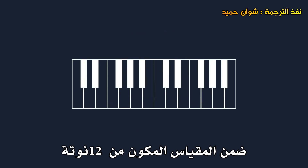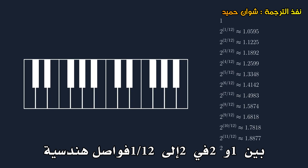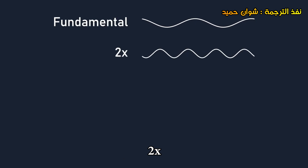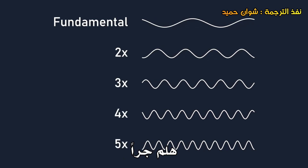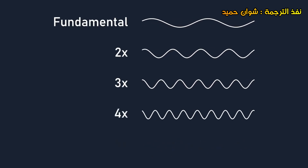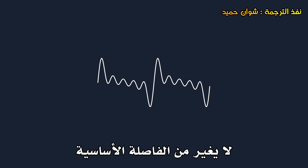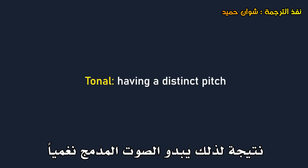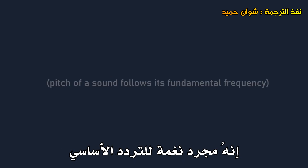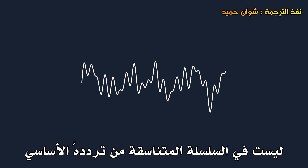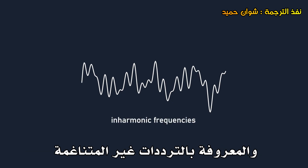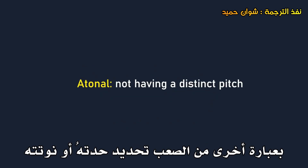The ratios of intervals within the 12-note scale range from 1 to 2 in 2 to the 1/12 geometric intervals. But if we look at frequencies that are integer multiples of the fundamental frequency — like 2 times, 3 times, 4 times, 5 times, etc. — those form a whole other system known as the harmonic series. The significance of the harmonic series is that adding on these harmonics doesn't change the period of the fundamental. As a result, the combined sound sounds tonal — it's very clear what pitch or note the sound is; it's just the pitch of the fundamental frequency. On the flip side, when a sound contains frequencies that are not in the harmonic series of its fundamental frequency, known as inharmonic frequencies, it sounds more atonal — it's harder to tell its pitch or note.